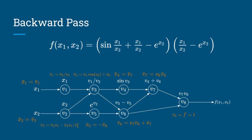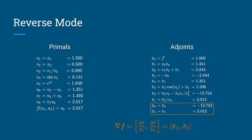Going back to the computational graph from earlier, we start at the right — at the last node, the derivative of the function with respect to itself is just one. Then you go back one node: for node v7, you have the adjoint of its single parent v8, multiplied by the derivative of v8 with respect to v7. You move backwards through the computational graph until you reach the first nodes, which are just the inputs. So in reverse mode, you have a forward pass and then a backward pass that goes node through node calculating the adjoints, and as a result you get the gradient of the function with respect to all its inputs.